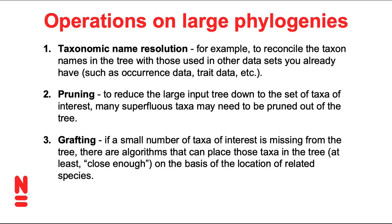The issue of taxonomic name resolution arises because different databases often use their own taxonomic naming schemes. For example, when you collect occurrence data from GBIF, it might use different taxonomic names than trade data from the Encyclopedia of Life Trade Bank. And when you take those data to your phylogeny, the tips in the tree may again be labeled with other names. What then needs to happen is to resolve whether these different names are synonyms, alternative spellings, or actually slightly different species concepts. There are a whole bunch of services that help with that type of resolution.